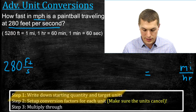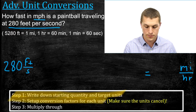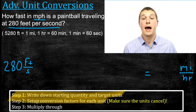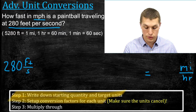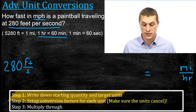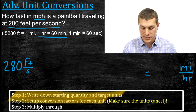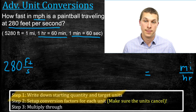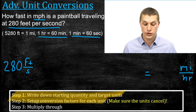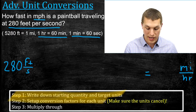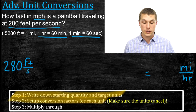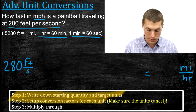Step two says set up conversion factors for each unit. You'll notice we're going to do the time conversion in two steps, because it's common to know how many minutes are in an hour (60) and how many seconds are in a minute (60), but not as common to know how many seconds are in an hour directly. We can add as many conversion steps as we need to get the problem done.